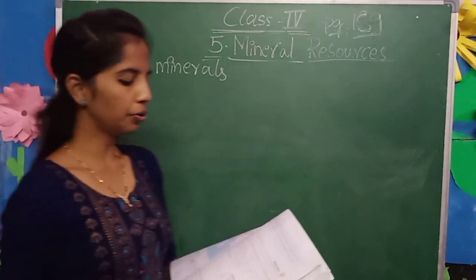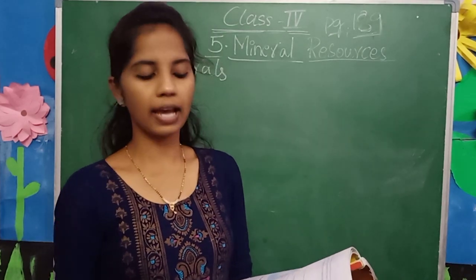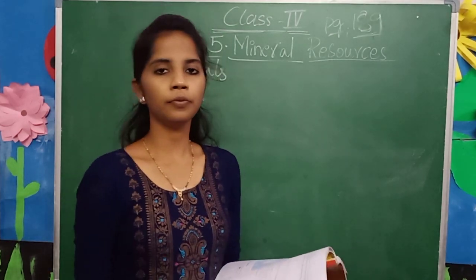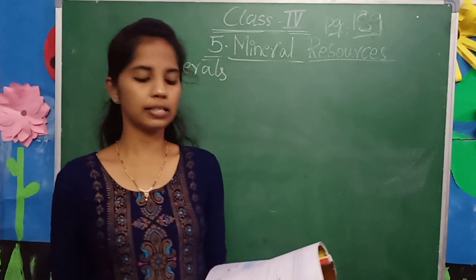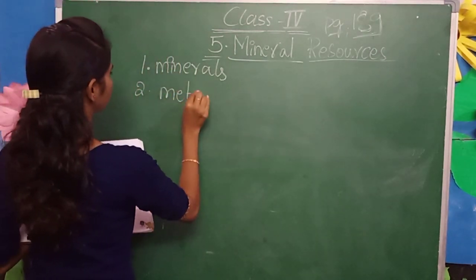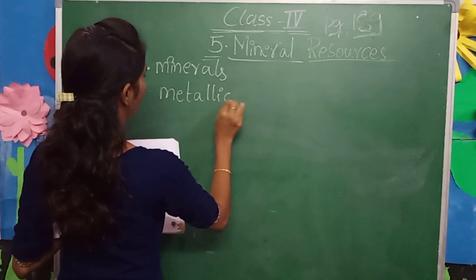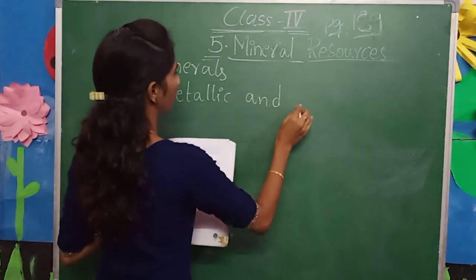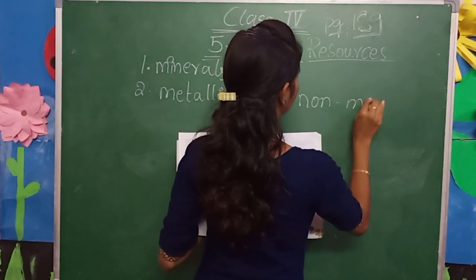Next one. The two types of minerals are dash and dash. So what are the two types of minerals? Yes, one is metallic and another one is non-metallic.